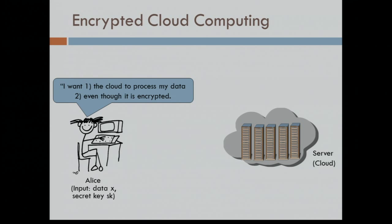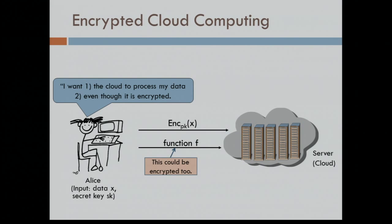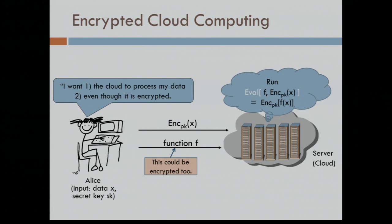Here is probably the best type of application of this technology. There's Alice. She wants the cloud to store her data and do the processing on that data for her, but she doesn't want the cloud to see what's in there. So she's going to encrypt the data to the cloud. She has her X that she cares about. Later on, she's going to send a function that she wants the cloud to compute on X on her behalf. The function can be encrypted as well, or maybe in the clear. The main thing is the cloud should be able to run some evaluation procedure on the encrypted data and the description of the function.